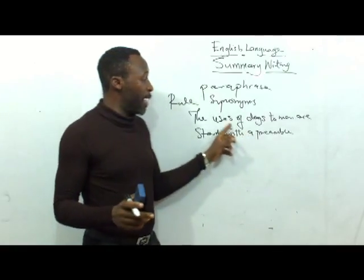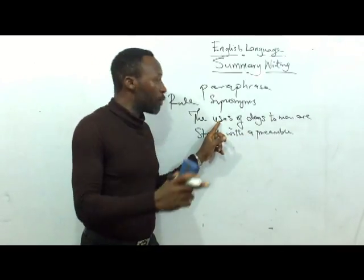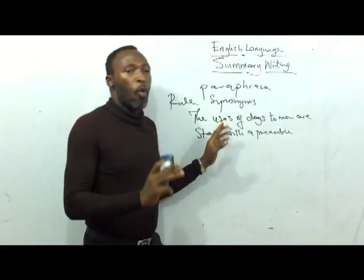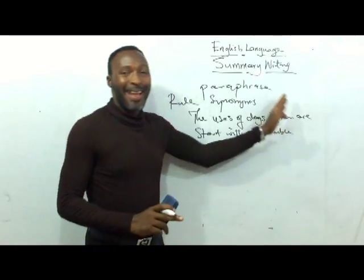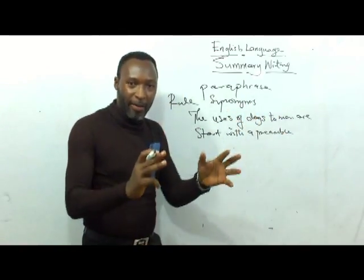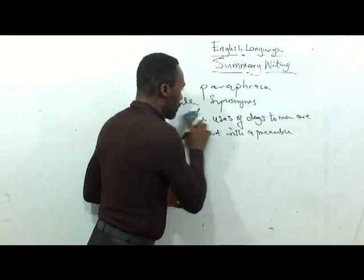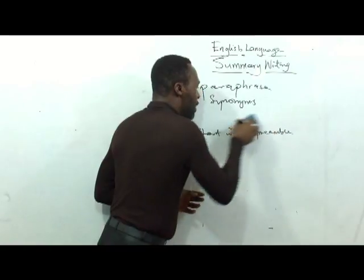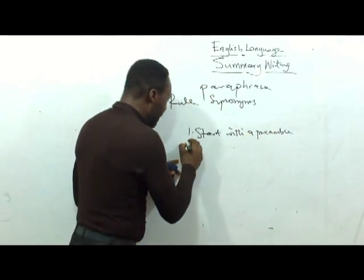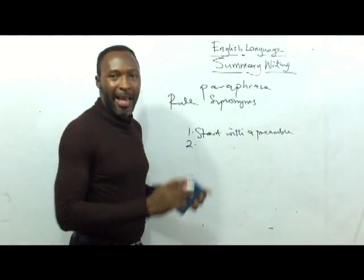The reason for this preamble is so that you don't begin to repeat 'the use of dogs to man are one, the use of dogs to man are two, the use of dogs to man are three.' Once you have the preamble, the next thing you do is list the uses of dogs to man based on what is written in that passage. The second rule is: at the end of the preamble, add a colon.